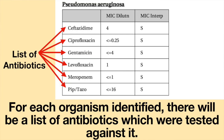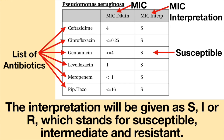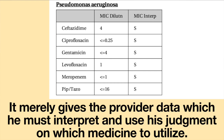For each organism identified, there will be a list of antibiotics which were tested against it. The minimum inhibitory concentration, or MIC, is reported along with the interpretation of the MIC. The interpretation will be given as S, I, or R, which stands for susceptible, intermediate, and resistant. The report does not tell the clinician which antibiotic to use — it merely gives the provider data which he must interpret and use his judgment on which medicine to utilize.